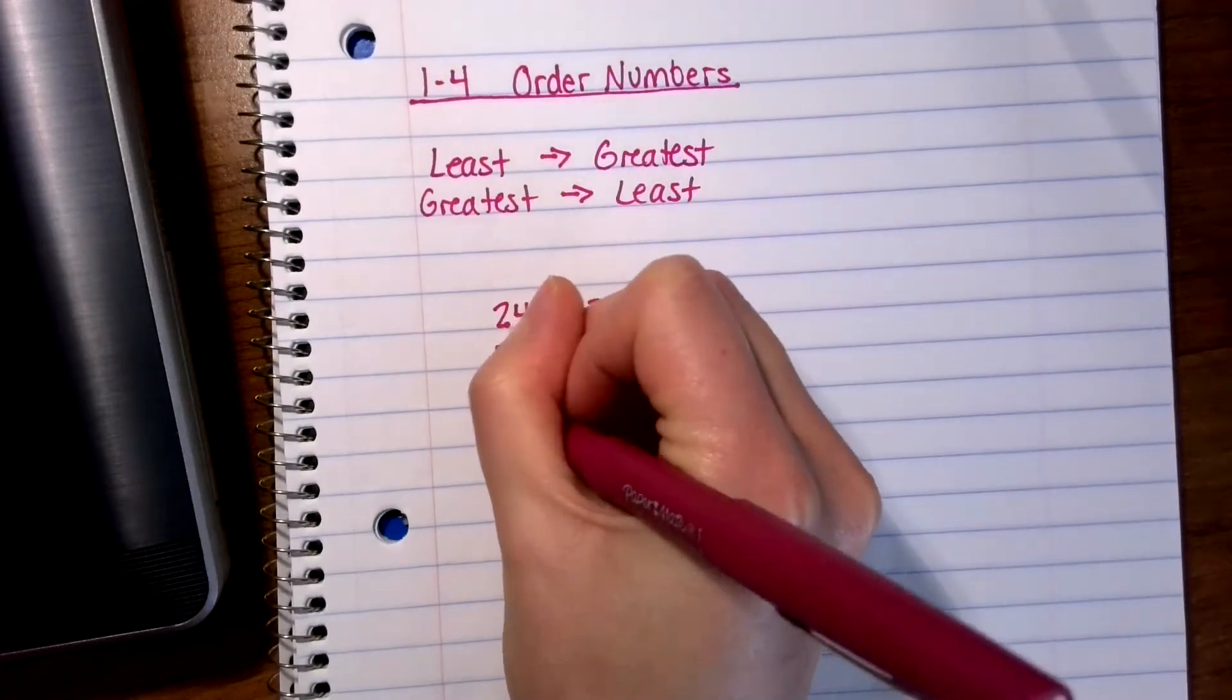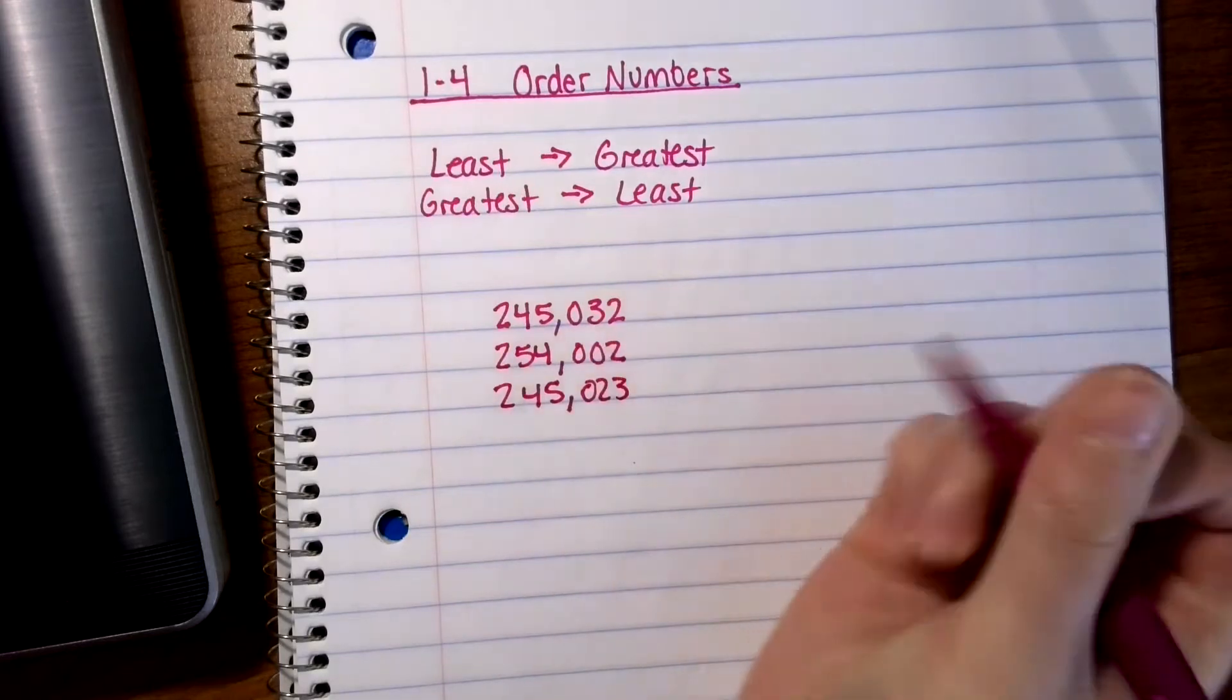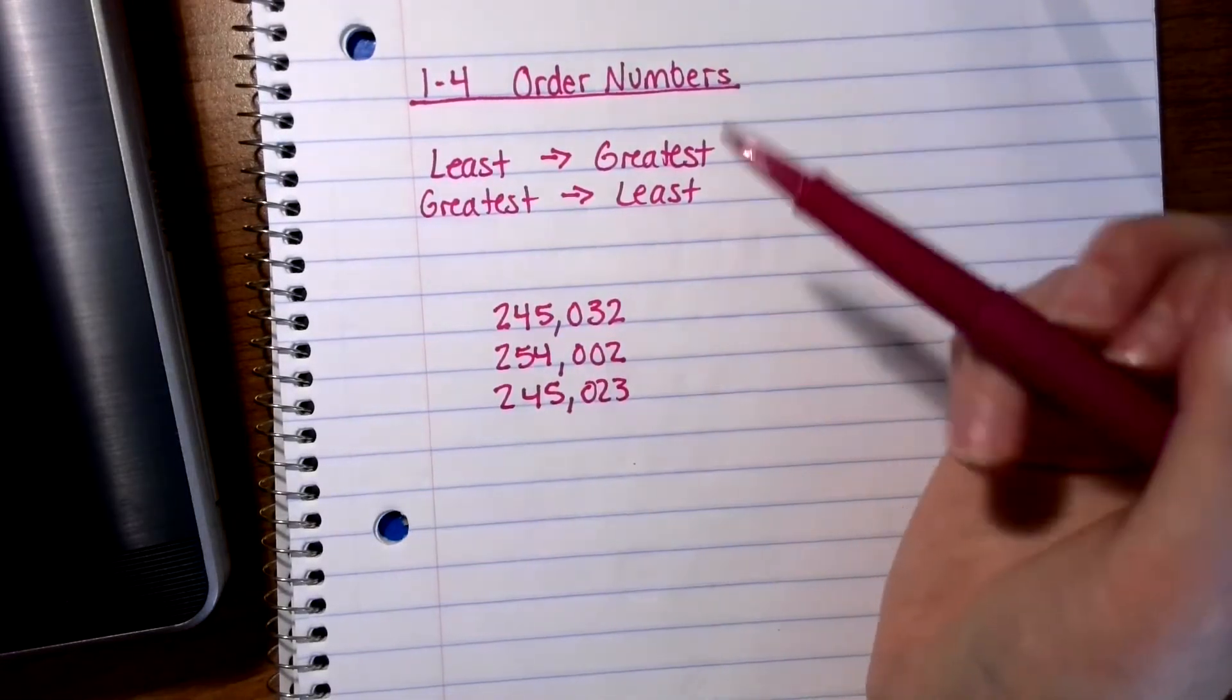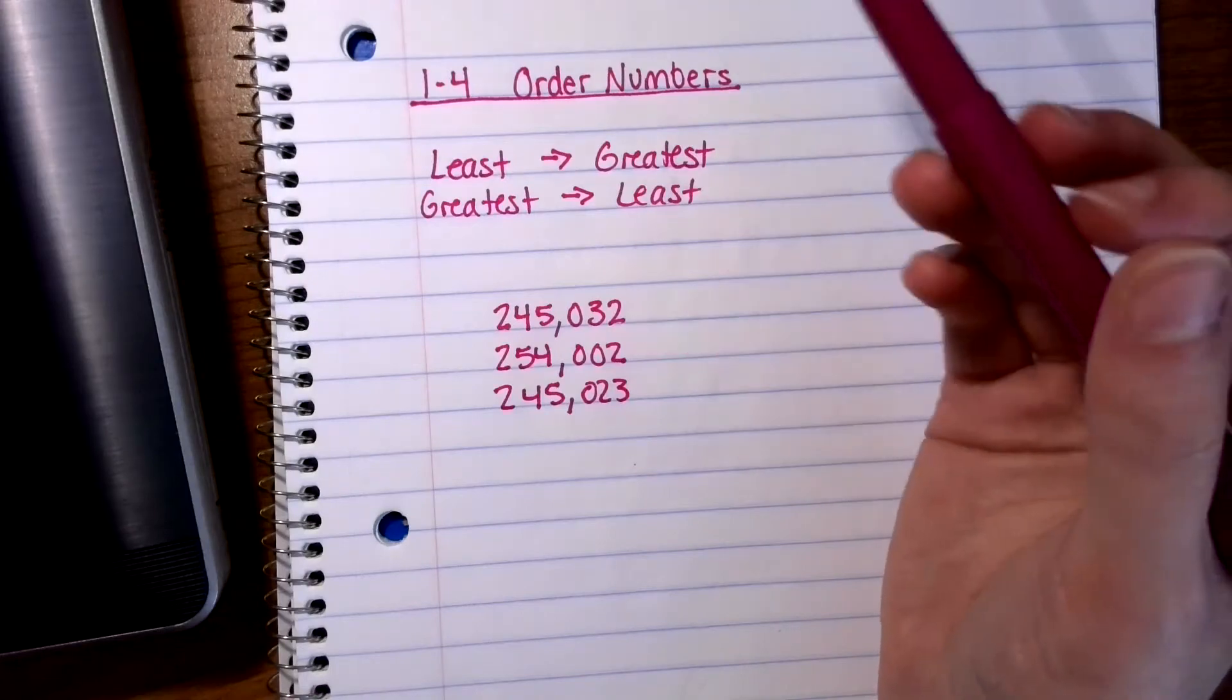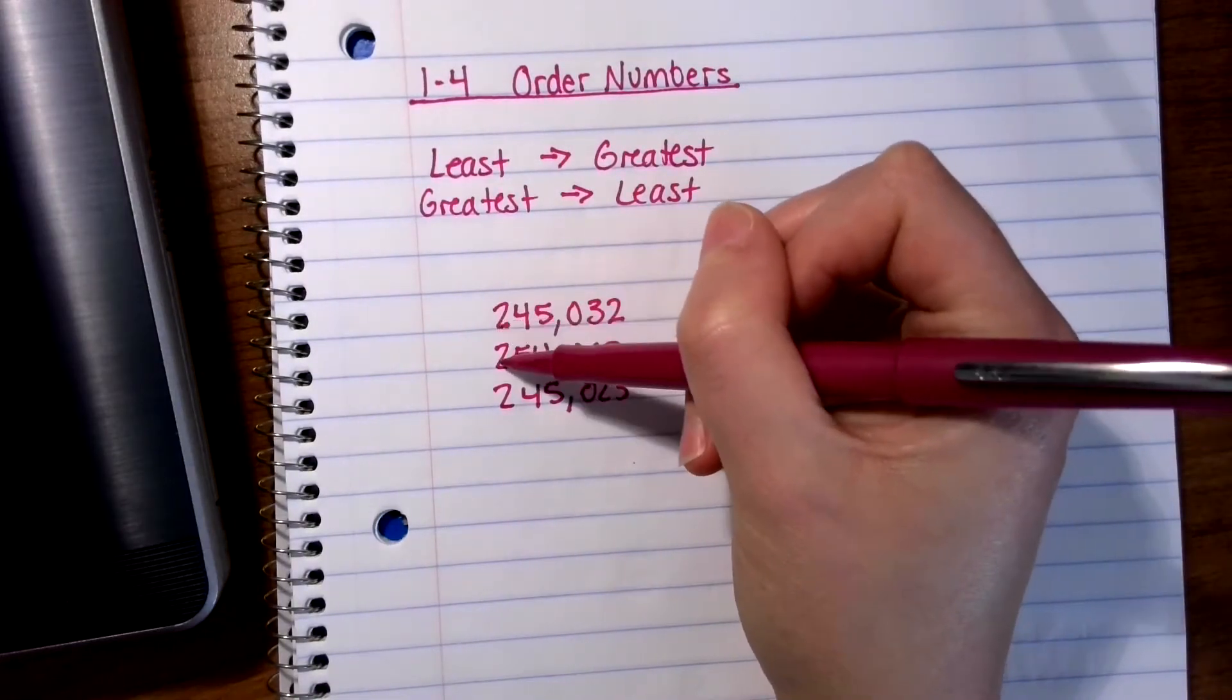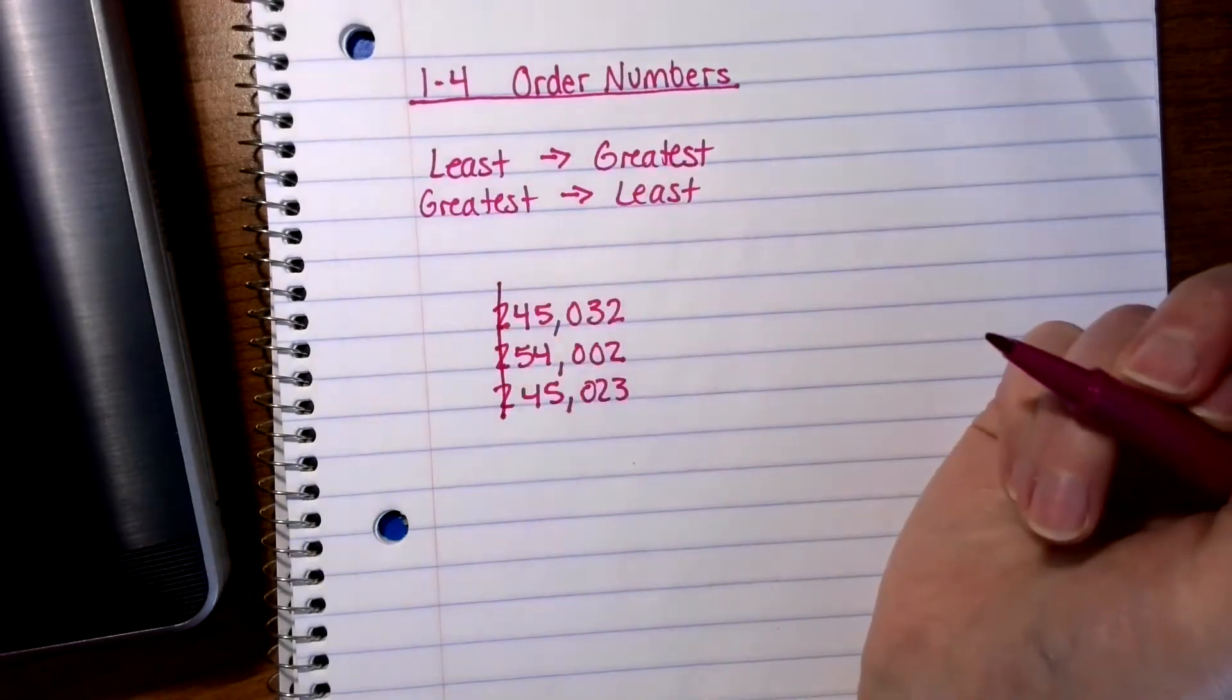So I'm going to write these down. And I'm trying to line up my digits as best that I can. Alright, so I see that all of these numbers are in the hundred thousands place. So I know that I need to start by comparing the hundred thousands. So it looks like we have two, two, and two. Those are all the same. So I can't compare from that column.